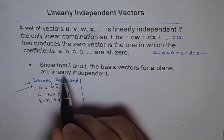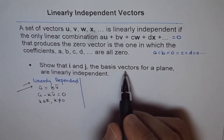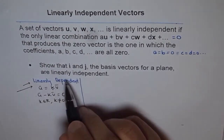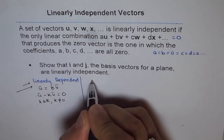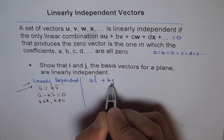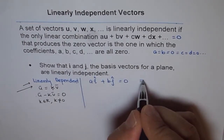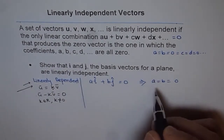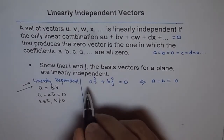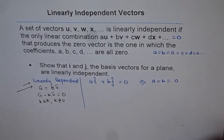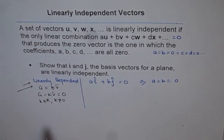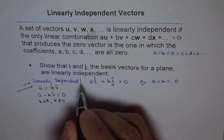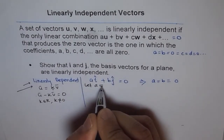We want to show that i and j, which form the basis for R2, are linearly independent. What we want to prove is that if we write a·i + b·j = 0, that implies both a and b must equal 0 for them to be linearly independent. If we can find some other values of a and b that make this 0, then they are dependent. Our strategy is to assume a is not equal to 0 and see what happens.